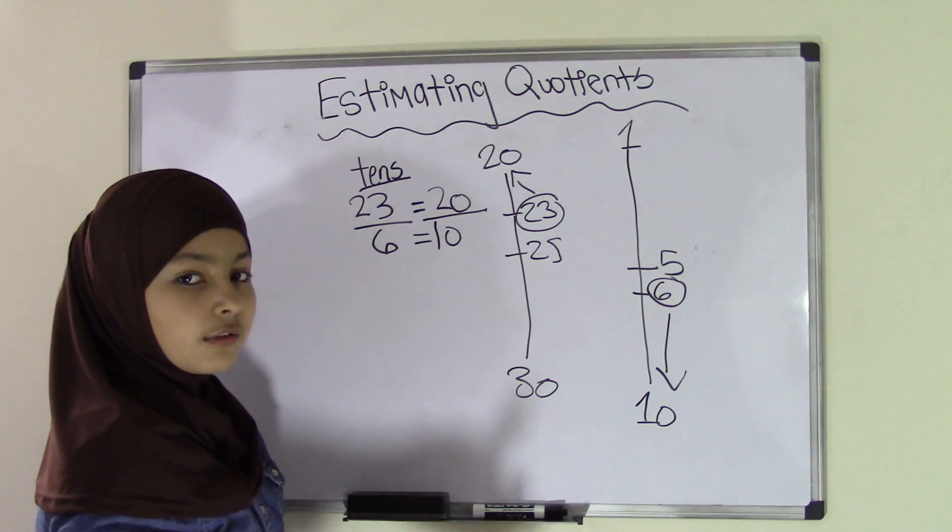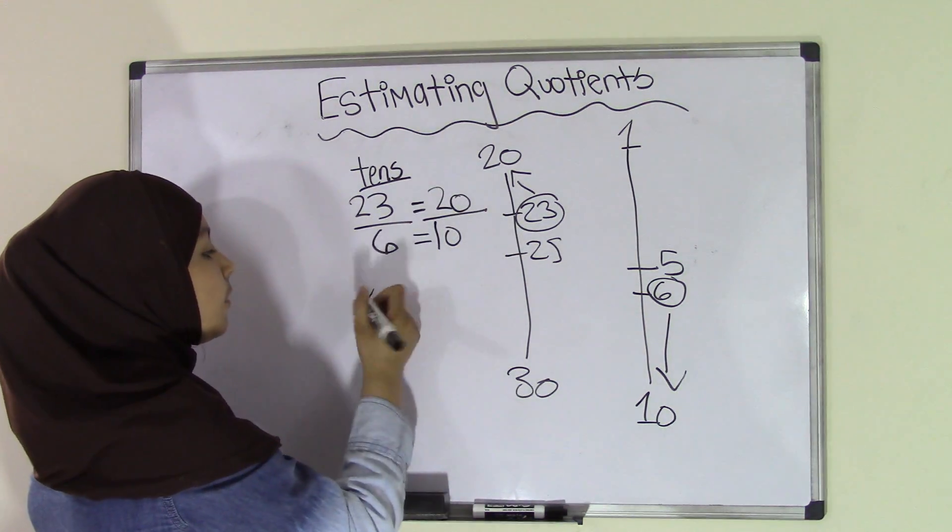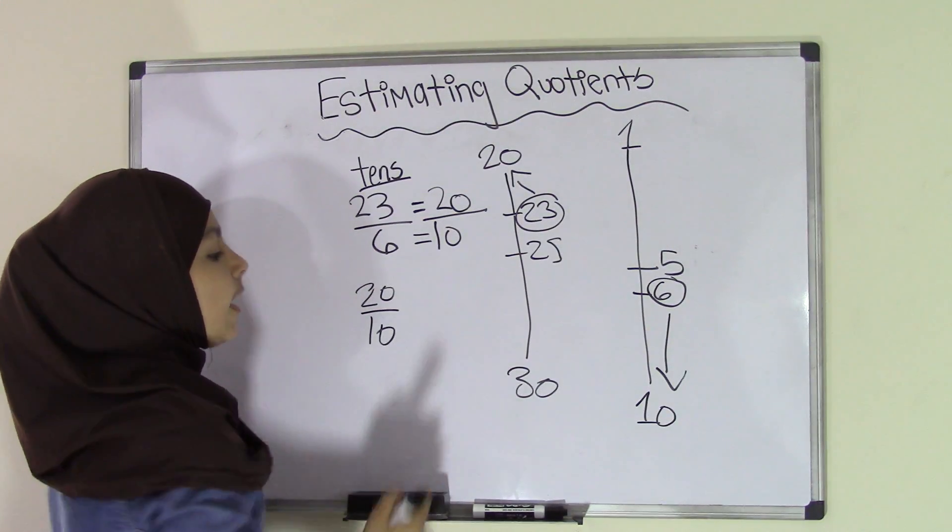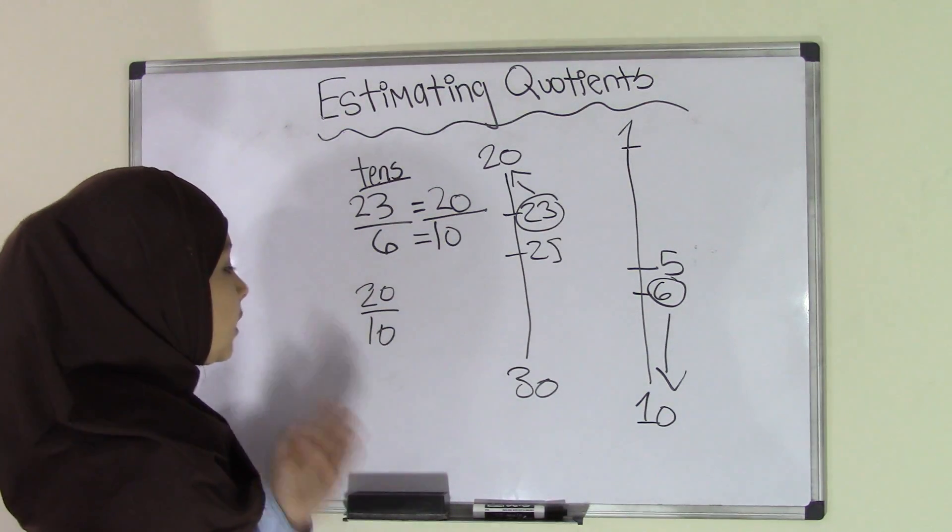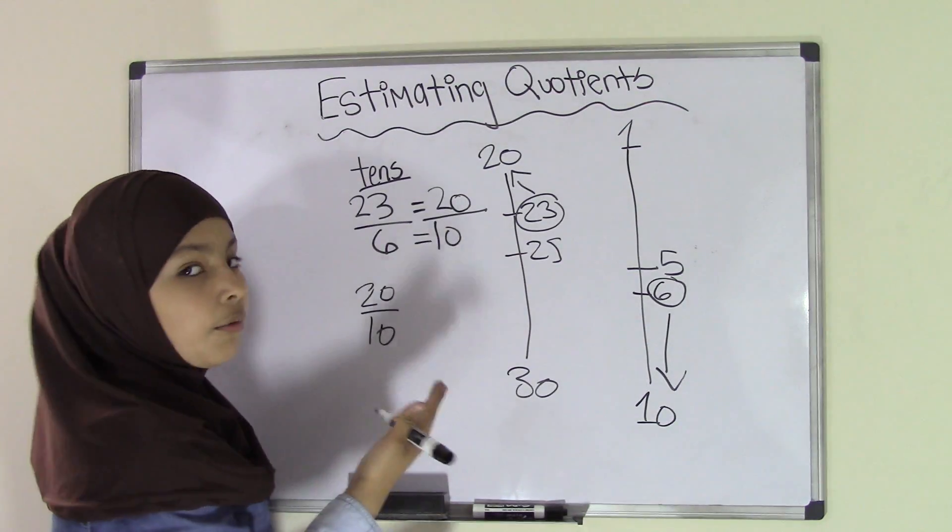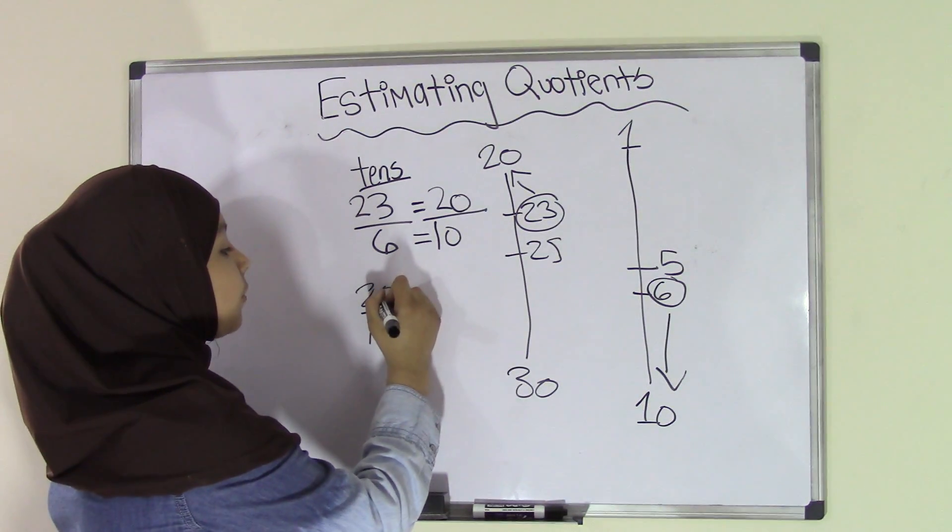Now, all we're going to do is a simple division. So now we have 20 divided by 10. In our previous video, we talked about such situations that when you have zeros, you can always cut them off. So if we're going to remove 1 zero from here, we're going to remove 1 zero from here.